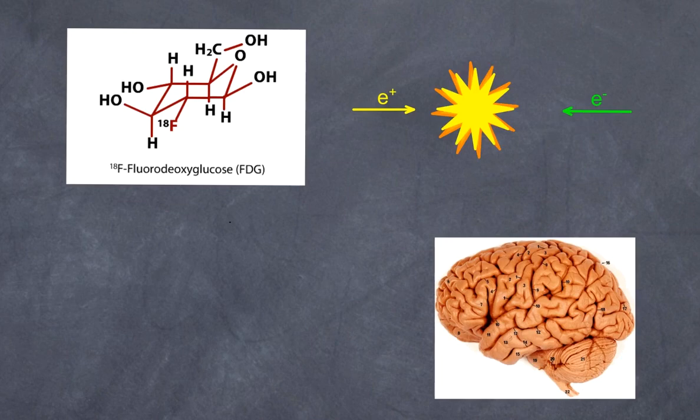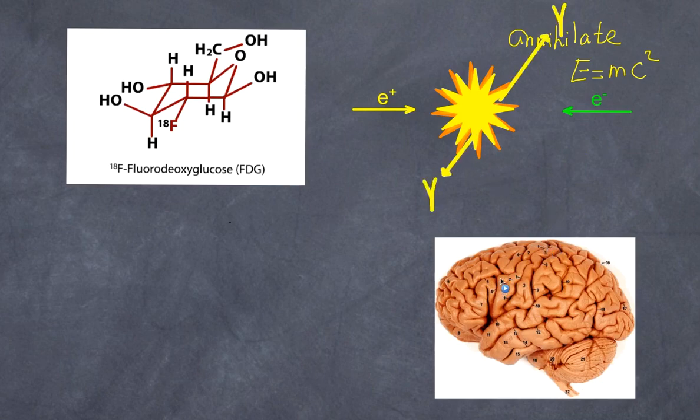What happens when these two come together? They annihilate—that is, they completely destroy each other. The mass that both the positron and the electron have completely disappears and is converted into energy, calculated by E = mc². Here we have a classic example of an application of Einstein's famous equation. The energy produces two photons of gamma radiation, and these two photons travel at 180 degrees to each other.